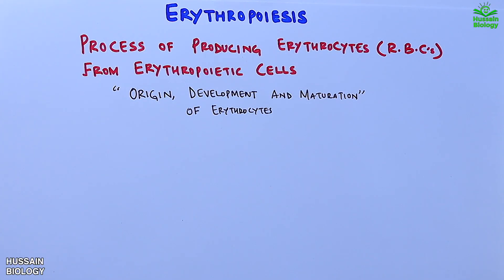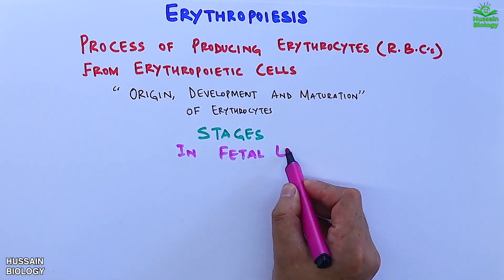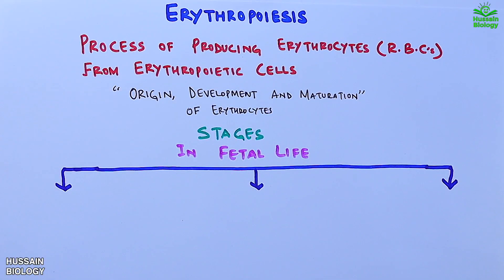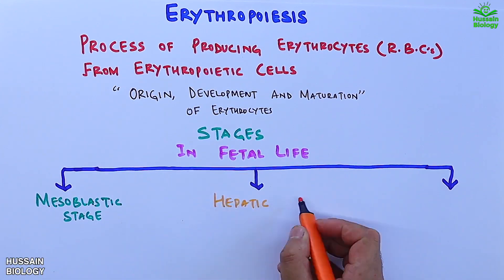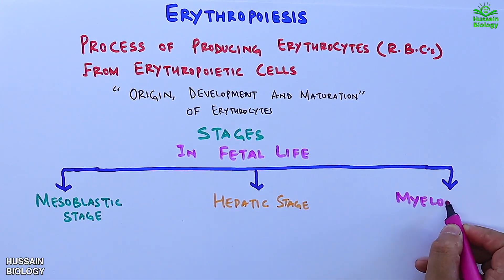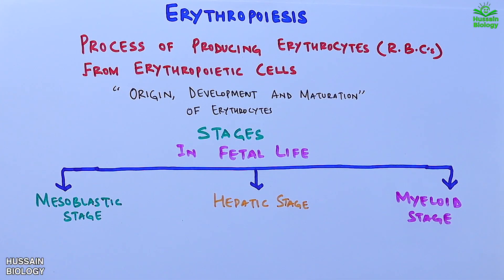Erythropoiesis differs with time during different stages of life. First we have the fetal life, which is divided into three stages: the mesoblastic stage, hepatic stage, and myeloid stage.